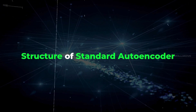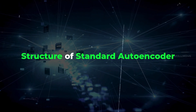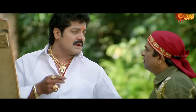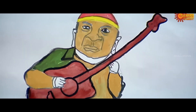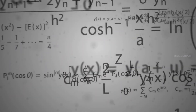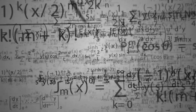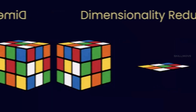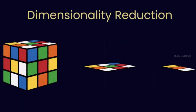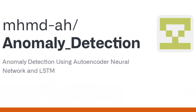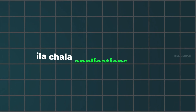Next, the structure of a standard autoencoder. The autoencoder tries to compare the original image to the reconstructed image. The loss function used is reconstruction loss, commonly mean squared error. Applications include dimensionality reduction, denoising, anomaly detection, and many more.